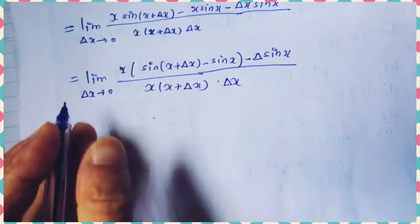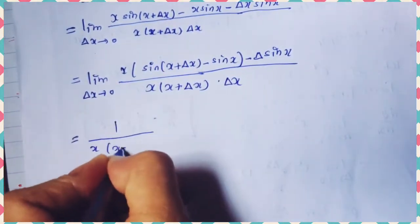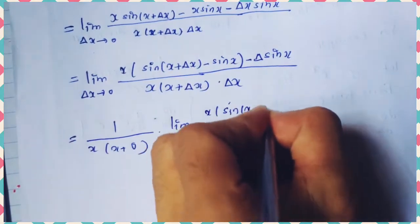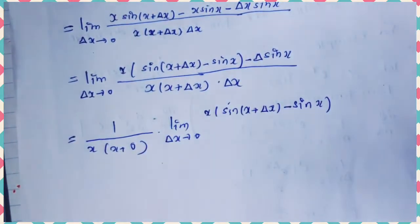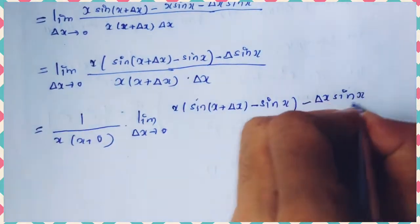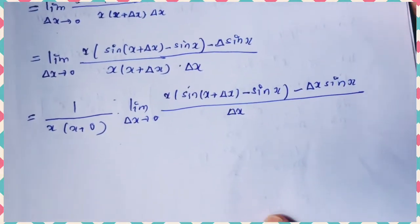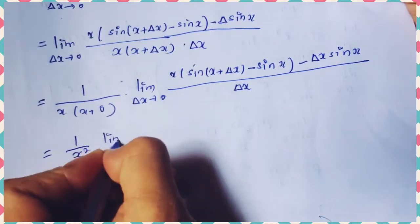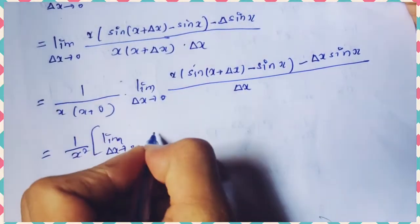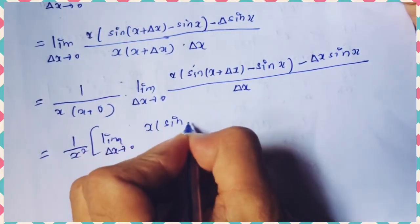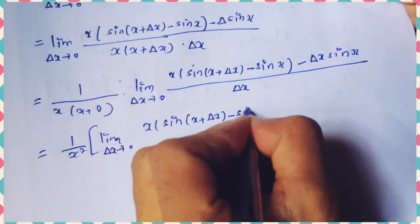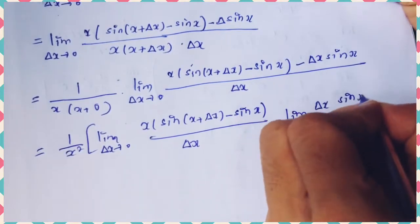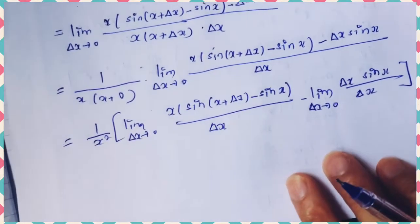Expanding the numerator: x·sin(x + δx) − x·sin(x) − δx·sin(x), all divided by x·(x + δx)·δx. We factor out and separate this into two limit terms.